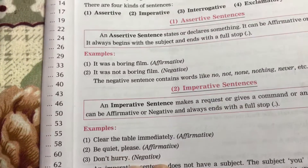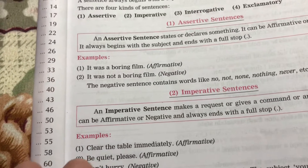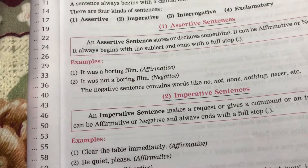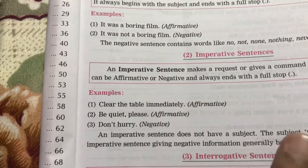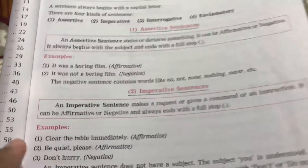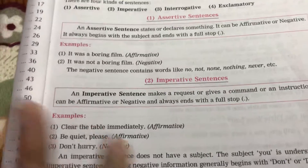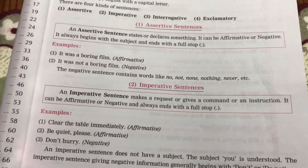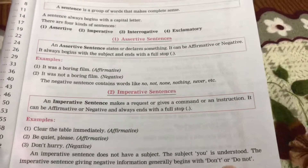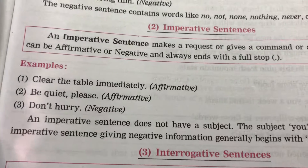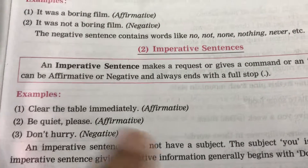'Be quiet, please' — if your teacher says this, it may be an instruction. If she is not angry and says it simply, it may be a request, or it may be a command. An imperative sentence does not have a subject — the subject 'you' is understood. You can see in all three example sentences there is no subject, so we imagine that 'you' is the subject. Also, an imperative sentence giving negative information generally begins with 'don't' or 'do not'.